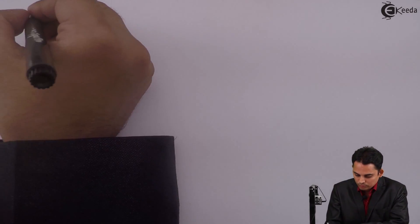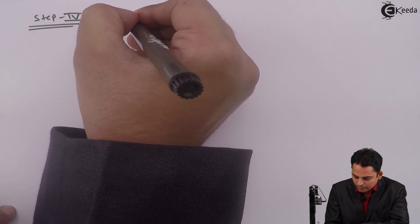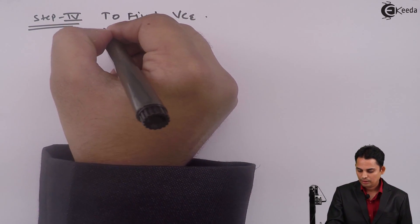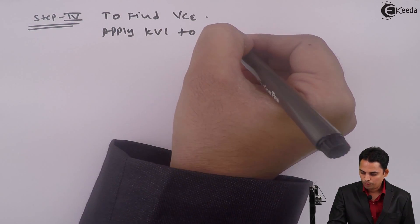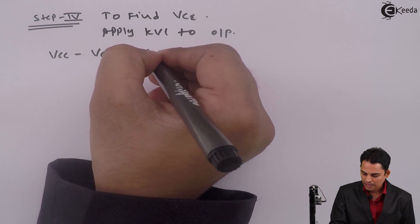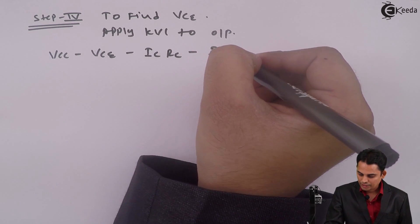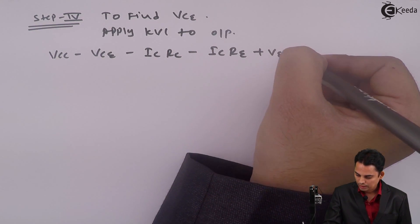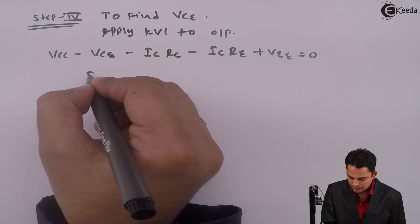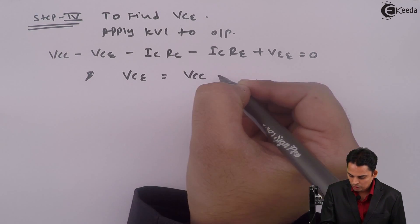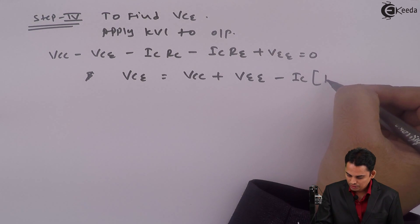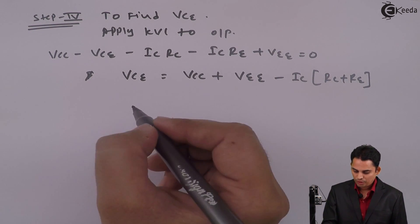Step 4 is to find VCE. For that, apply KVL to output loop. Equation will become VCC minus VCE minus IC into RC minus IC into RE plus VEE is equal to 0. Hence VCE is equal to VCC plus VEE minus IC into bracket RC plus RE.